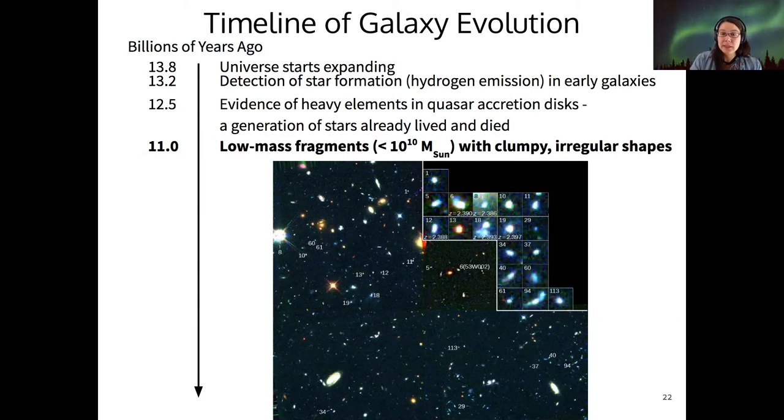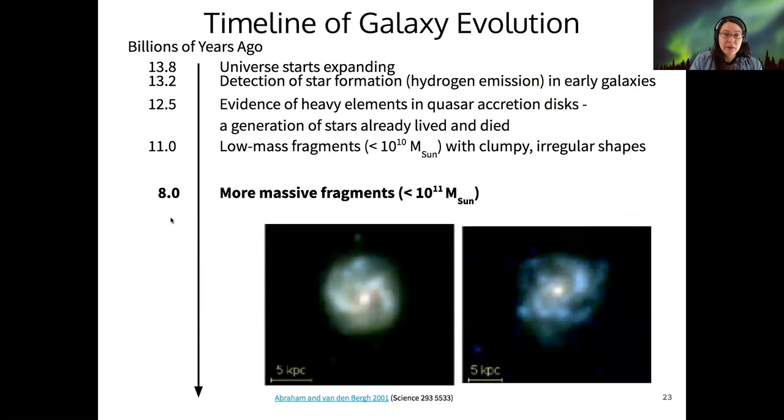In this image, these are very clumpy, irregular galaxies. You can see some of them appear like they have maybe multiple cores. These irregular shapes of galaxies also have very low mass, so 10 to the 10 times the mass of the sun.